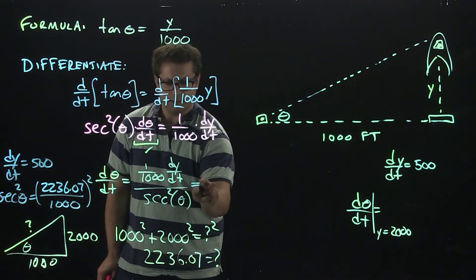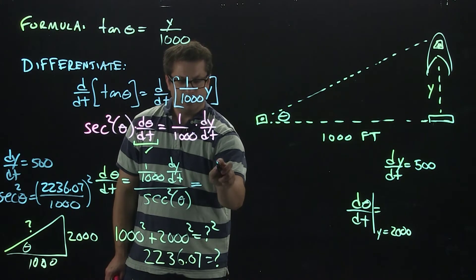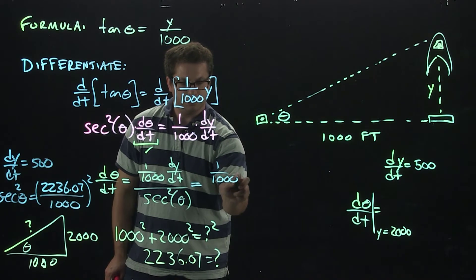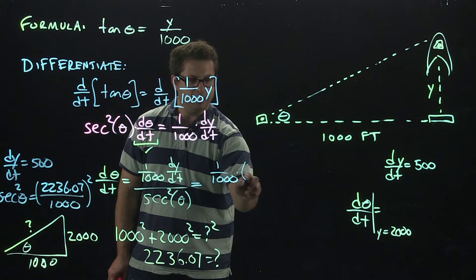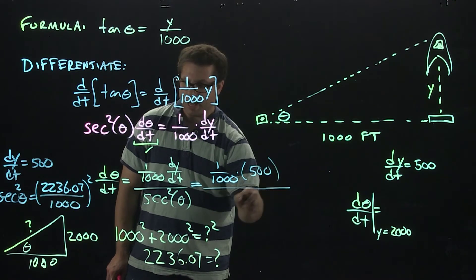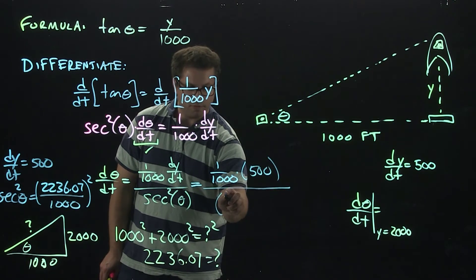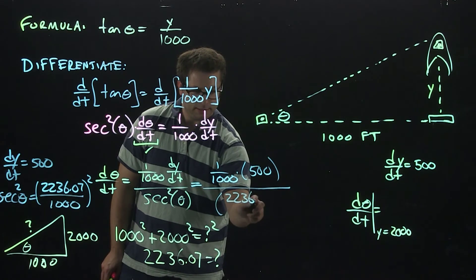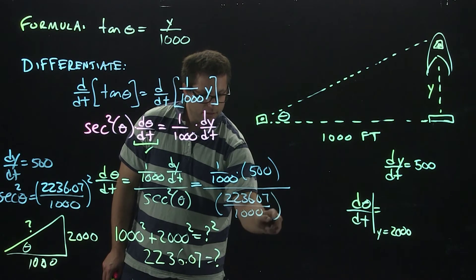All right, so let's go ahead and plug in all our information here. We have 1 over 1,000. We have the dy/dt, which is 500. And on the bottom, we're going to have that big number over there, the 2,236.07 divided by 1,000 all squared.